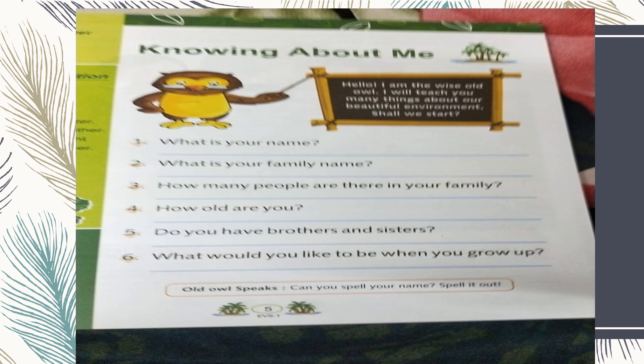Moving on to the next question: do you have brothers and sisters? If you have one brother or two brothers, you have to say yes, I have one brother and his name is this. Or there may be a sister also, so you have to say yes, I have one sister or two sisters. In this way you have to introduce your brothers and sisters.